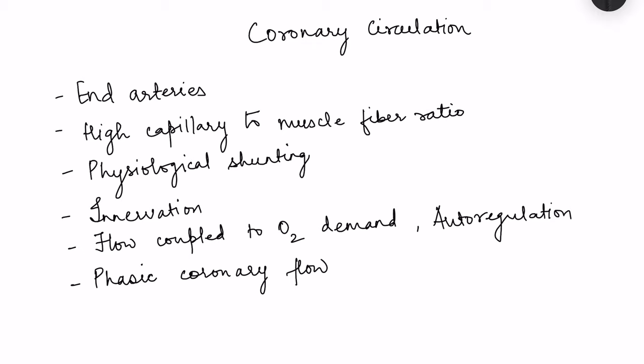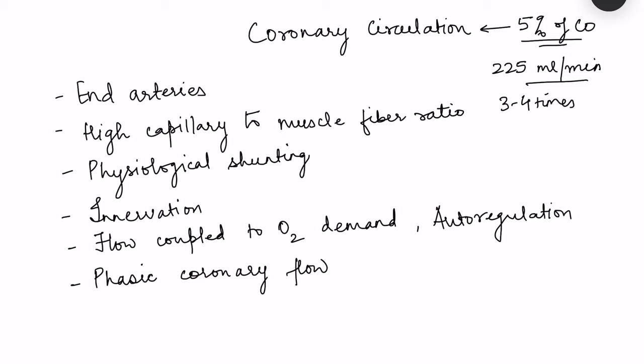Coronary circulation supplies nutrition to the heart. Normal coronary circulation is approximately 5% of cardiac output, which comes to around 225 ml per minute. This coronary circulation will increase depending on the demands of the heart, so whenever oxygen requirement increases, the coronary circulation can increase up to 3 to 4 times.